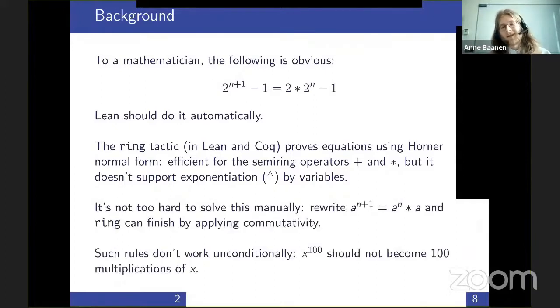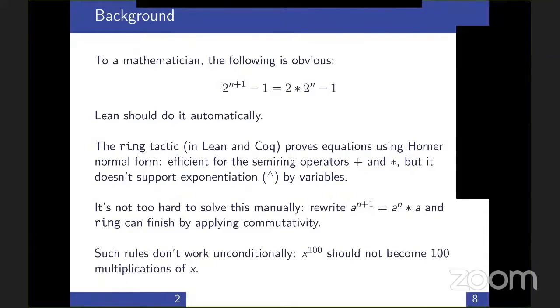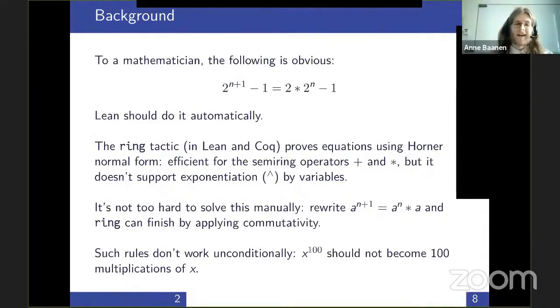Unfortunately, we cannot easily extend the Horner form to do this, but we can do it manually. We take the equation a^(n+1) = a^n × a, which is already proved in Lean, and if we rewrite using that, ring can finish the job. But the problem is you cannot just do all these rewrite rules as a pre-processing stage, because if you have an expression like x^100, it will be unfolded into 100 additions of the number one, and this blow-up would make it really impractical to run.